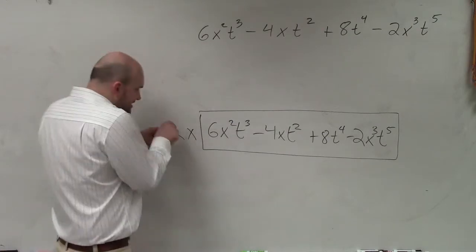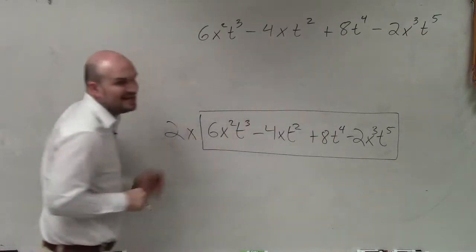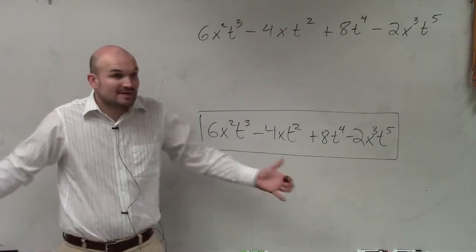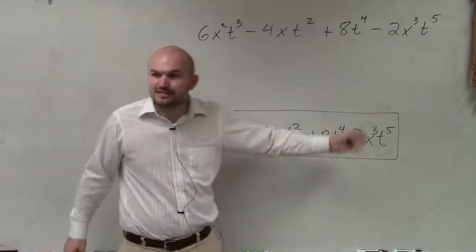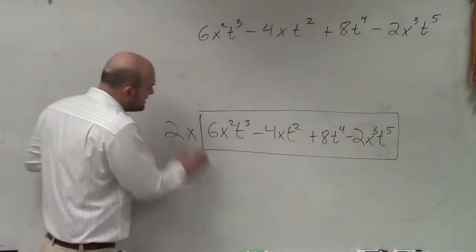But the problem we have is 2x times what gives you 8t to the fourth? Nothing, right? So we can't use x. So if x is not a part of every single term, then guess what? We can't use it.